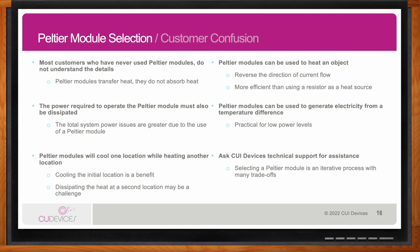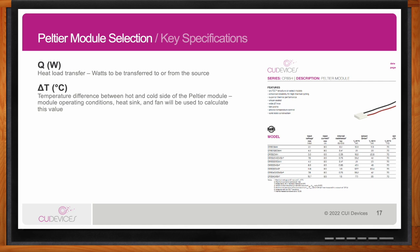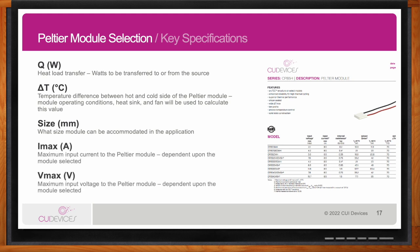There are five key specifications for Peltiers. First is Q or Q-max, measured in watts — the heat load transfer, meaning the amount of heat that needs to be removed from the system. Second is delta T, the temperature difference between the hot and cold sides of the Peltier. Engineers need to consider heat sinks, fans, and operating conditions when determining what is needed. Third is size — the physical dimensions of the Peltier module that can be accommodated in the application.